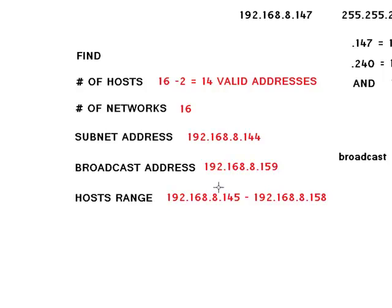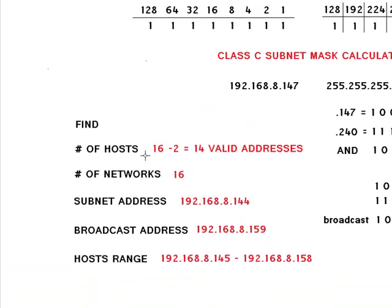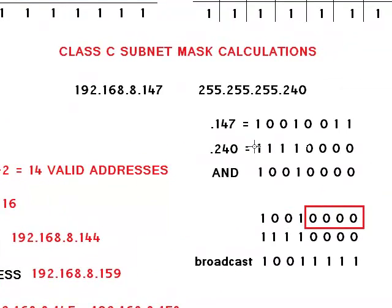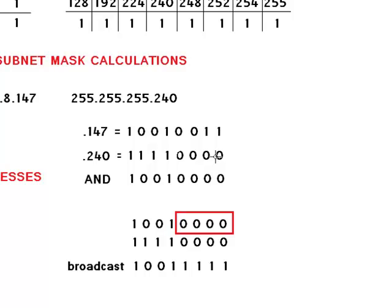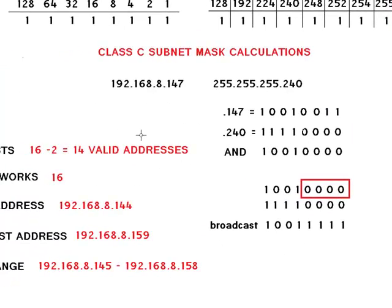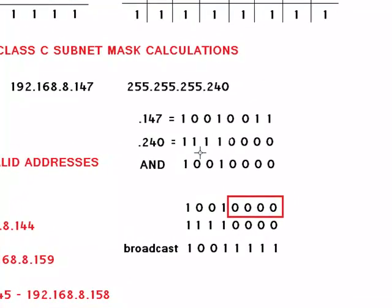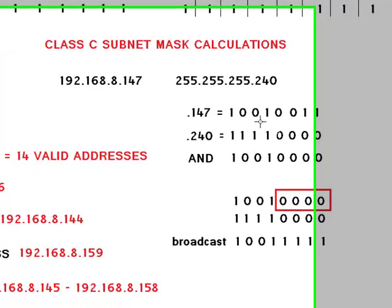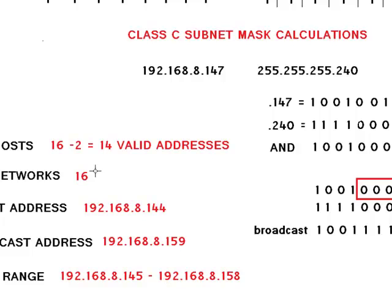Let's recap what we learned. To find number of hosts in class C addresses we take the number of zeros in the mask — we have 4 — and we do 2 to the power of 4 which gives us 16, but because we cannot use two addresses we do minus 2, which gives us 14 valid addresses available for our hosts, computers, and routers. To calculate number of networks we see how many ones we have in the mask in the last octet, which is 4. So we do 2 to the power of 4 which gives us 16. That means we can have 16 networks using the 240 subnet mask, each with 14 valid addresses.